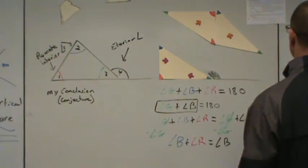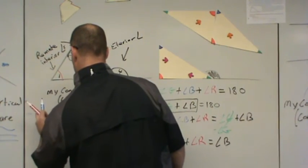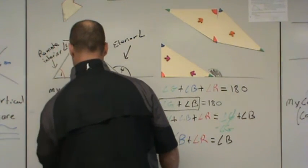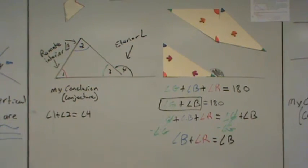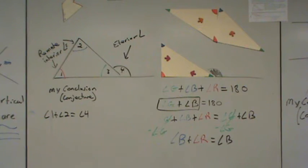So what is my conclusion? My conclusion here is that angle one plus angle two is equal to angle four. That's my conclusion. Angle one plus two is equal to four.